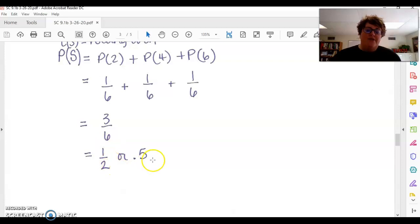And so when I add them together, I get 3 over 6, or 1 half, or 0.5. Which makes sense, because if you think about a dice, half of the numbers are even, half of the numbers are odd. So the probability that you will hit an even number is going to be half the time, or 50% of the time.